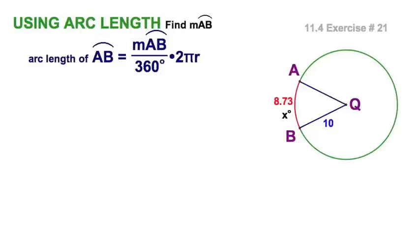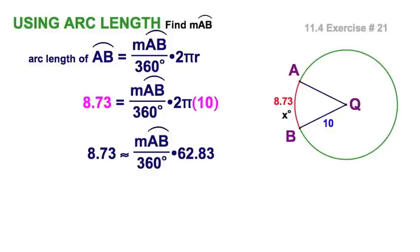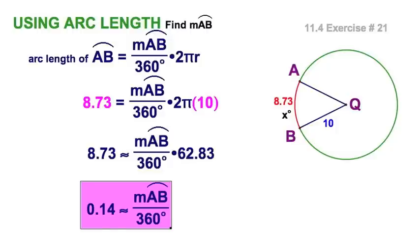Let's do a substitution. We're going to replace the measure of the arc AB with 8.73 and we know that the radius is 10. So we can move on here a little bit and you can see what we've done here. I've changed this to an approximation sign because now I've got 20π and I've gone with a decimal approximation of 20π right here.